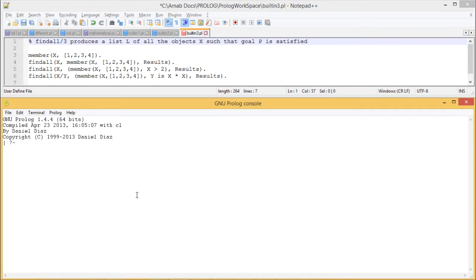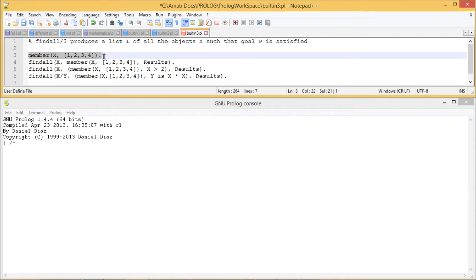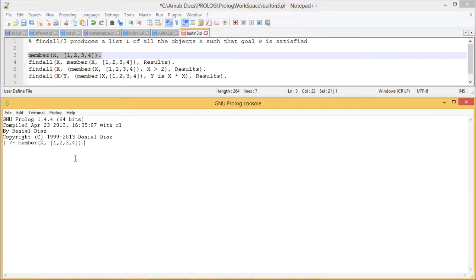We are going to demonstrate the built-in predicate findall. It requires 3 input arguments. Let me execute this member at first. Member is also one built-in predicate in Prolog. Now if I execute, then if I go for all answers, then I'm going to get X is equal to 1, 2, 3, and 4.